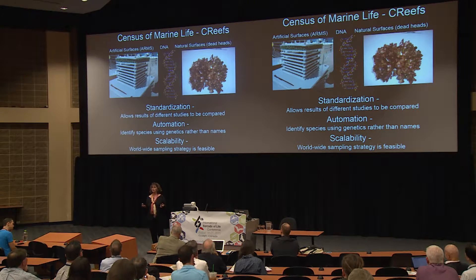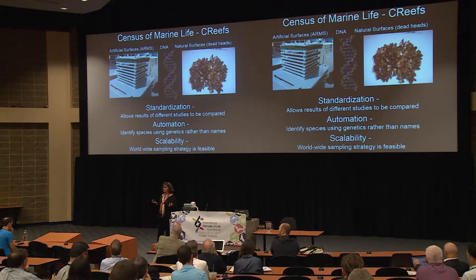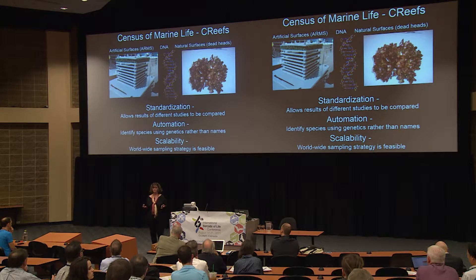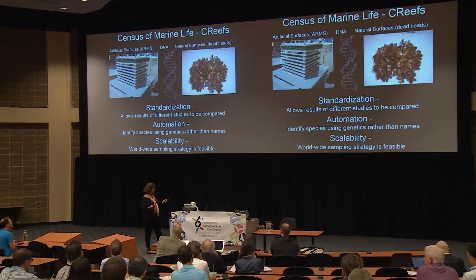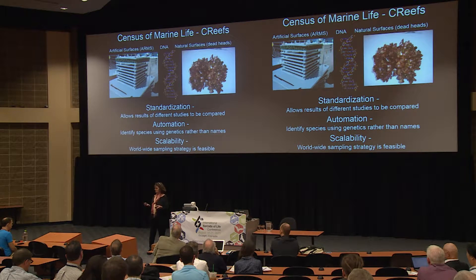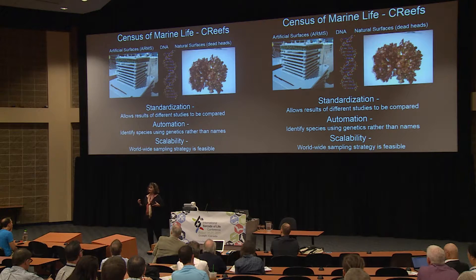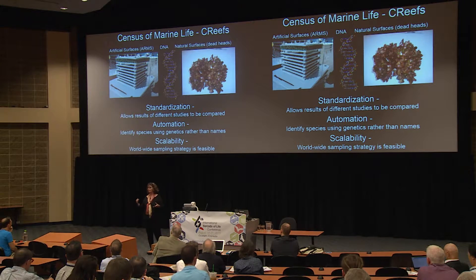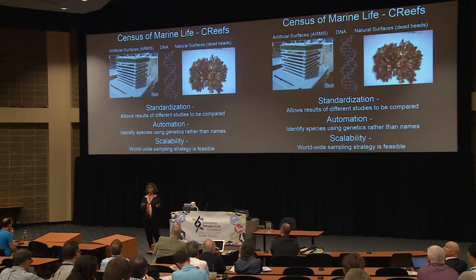We had two basic components of the approach. One was DNA — we forgot entirely about names and identified everything by DNA sequences. The other was to use standardized sampling. Two types of samples were used: dead heads of corals collected in a standardized volumetric way, and artificial settlement structures called ARMS — autonomous reef monitoring structures — consisting of a series of PVC plates with spaces between them so things can grow and hide there, like malaise traps for the ocean. Combining DNA and standardized sampling allows you to compare results from a wide variety of places and scale up to a worldwide sampling program.